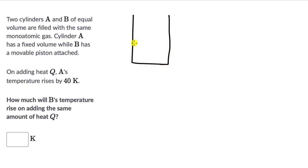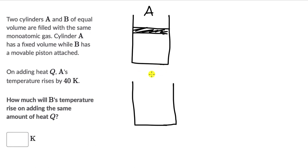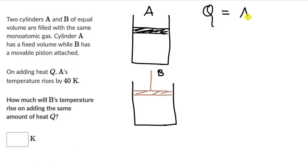The first cylinder has a fixed volume — this piston is not moving anywhere. This is cylinder A. Then we have cylinder B, which has a movable piston. Now, some heat is added to cylinder A, because of which the temperature rises by 40K. The volume of cylinder A is not changing, so from the first law of thermodynamics, when heat Q is added to a system, this is equal to the change in internal energy plus the work done by the gas.